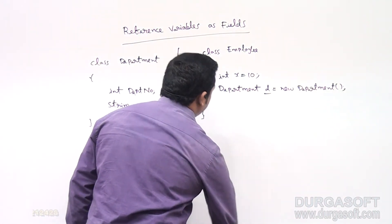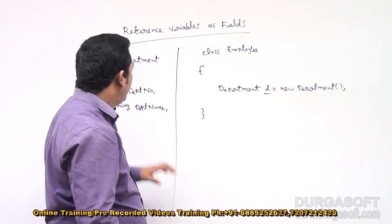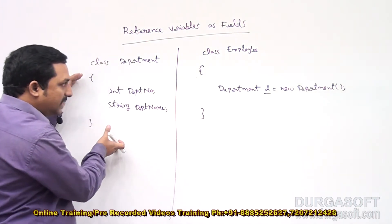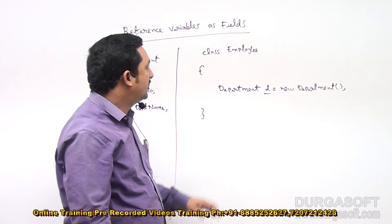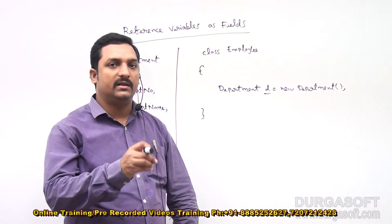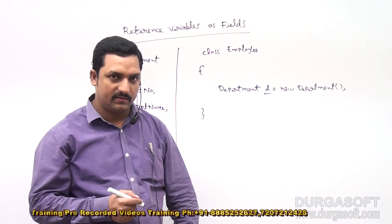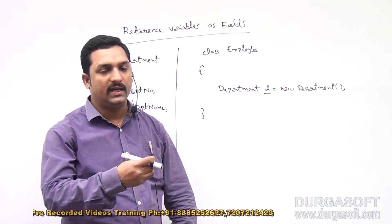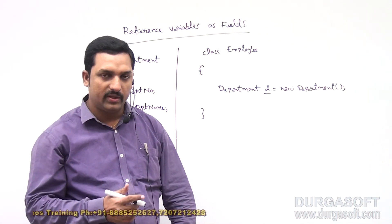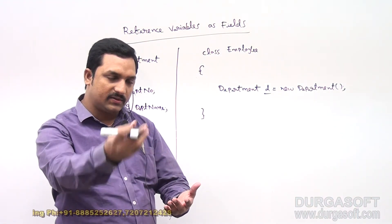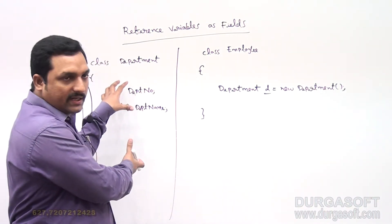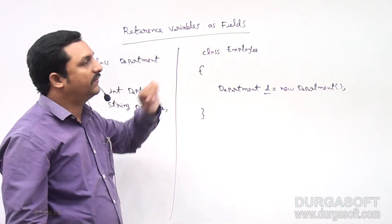So when does this type of situation occur? When you want to store other class-related details in this class, at that time we go for this particular topic. For example, there is an employee who joined the organization. He should belong to any one department — IT department, R&D department, or Sales department. To store which department this employee is working in, we use reference variables as fields.